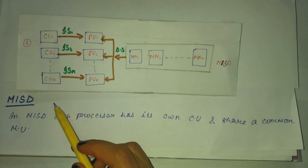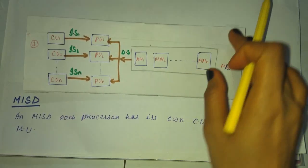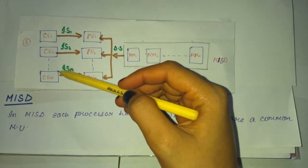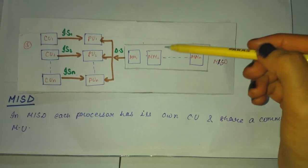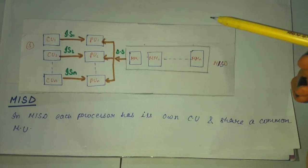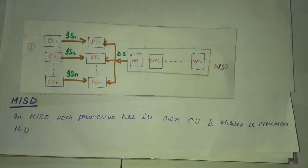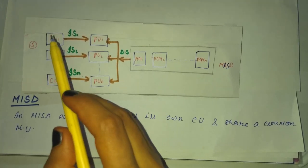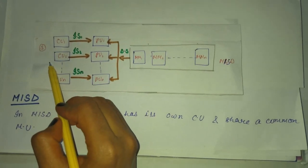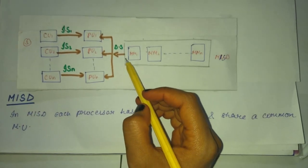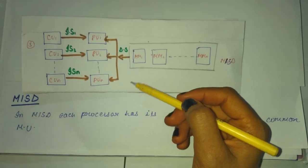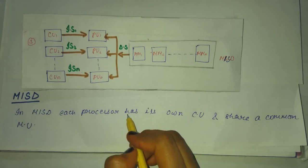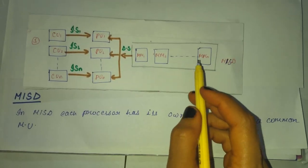MISD which is multiple instruction stream and single data stream. It is the diagram of MISD. It contains multiple CU, multiple PU and different memory modules. In MISD, all the processors get instruction individually from their CU and they operate on a single stream of data as per the instruction they receive from the respective CU. Each processor has its own CU and shares a common MU.